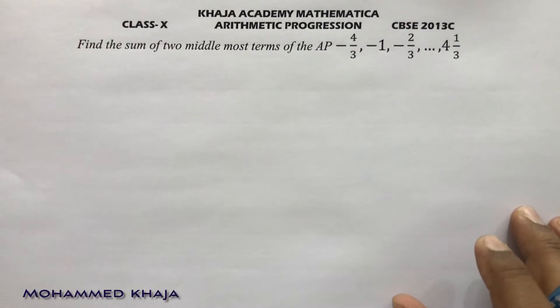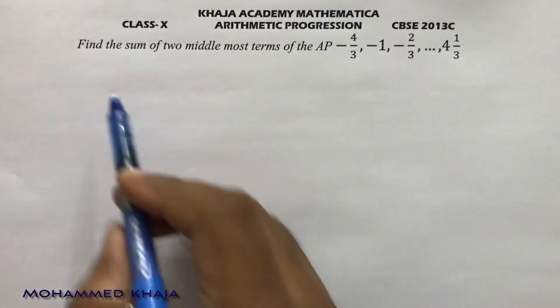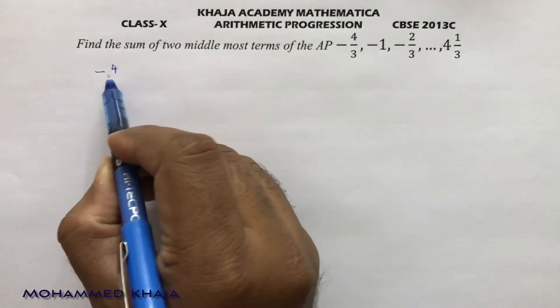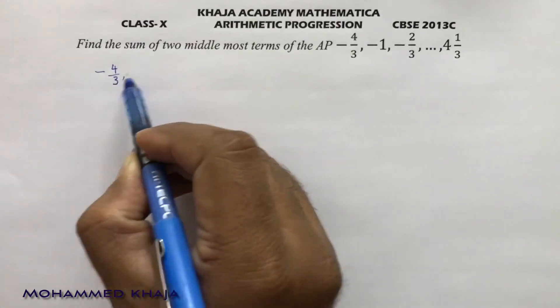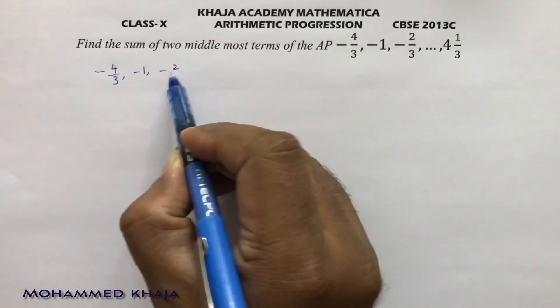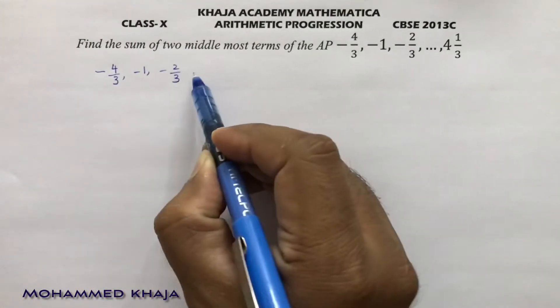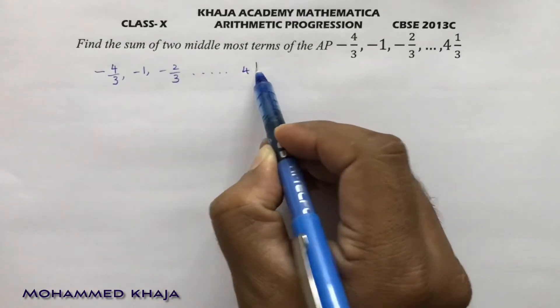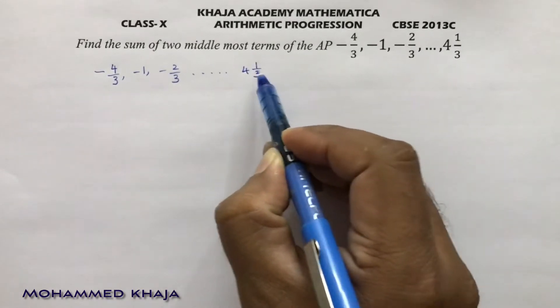Find the sum of two middlemost terms of the AP: minus 4 by 3, minus 1, minus 2 by 3, so on, 4, 1 by 3.